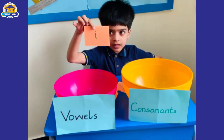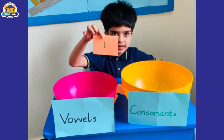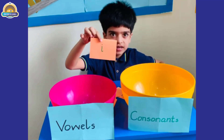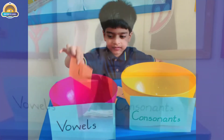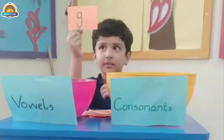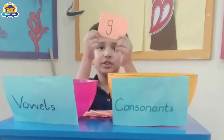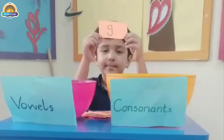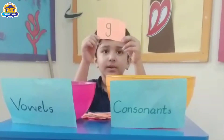Which letter is this? I. I — is it a vowel or consonant? Vowel. Which letter is this? G.